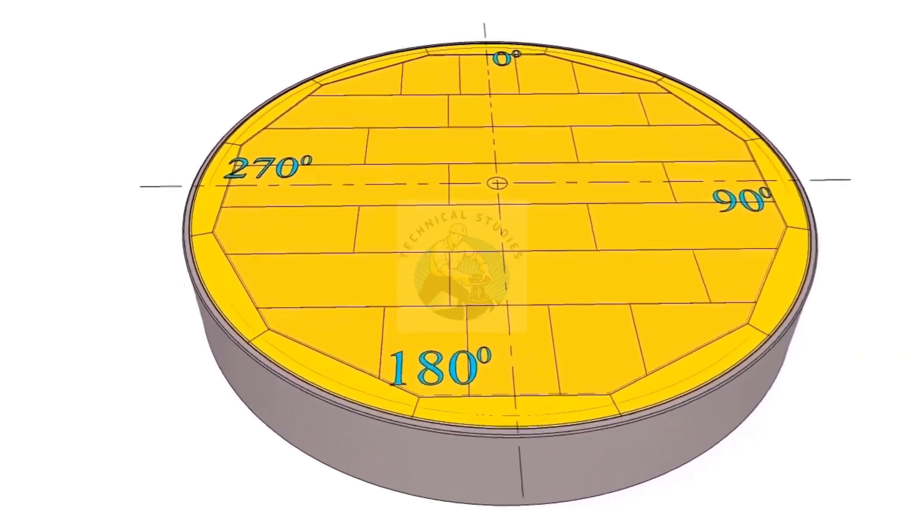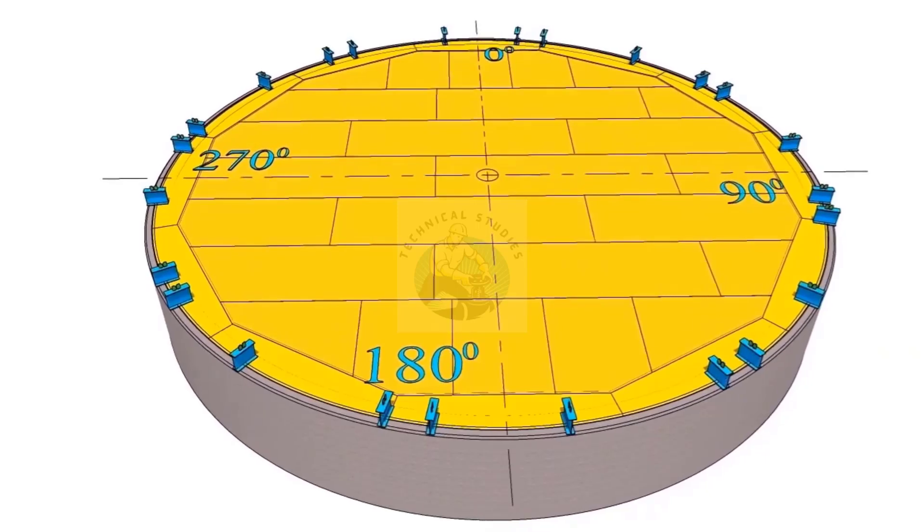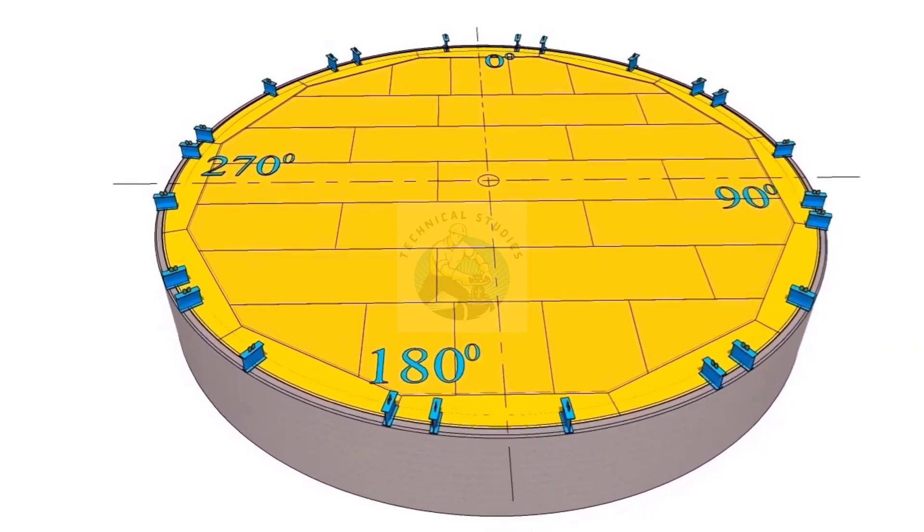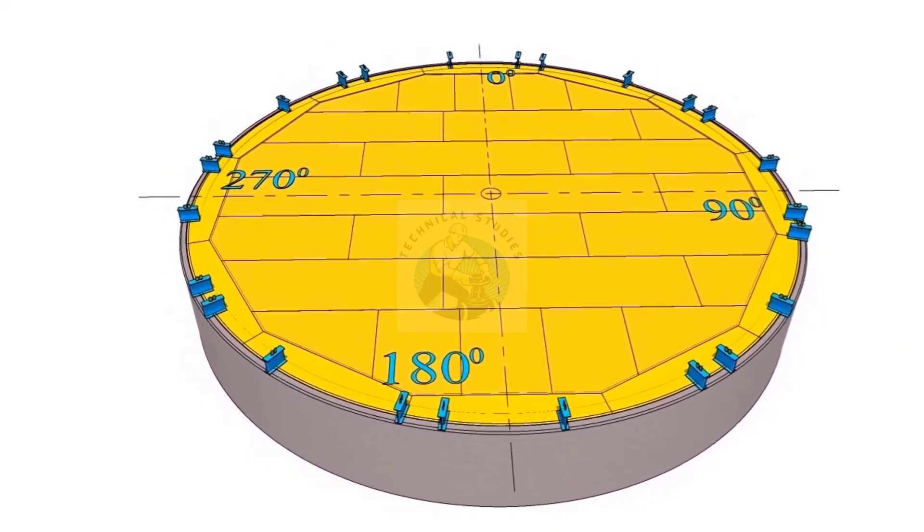Fix the required number of erection stools on the annular plate. Minimum height of the stools shall be 350 millimeters. Transfer the inner diameter of the tank on the stools.